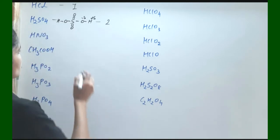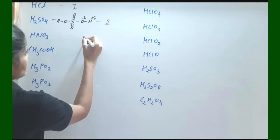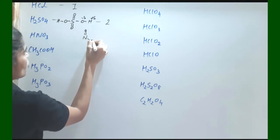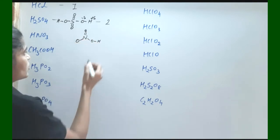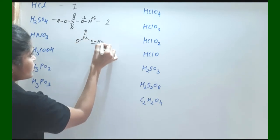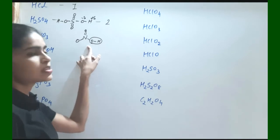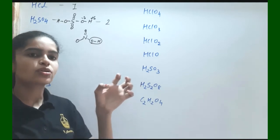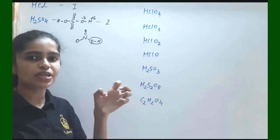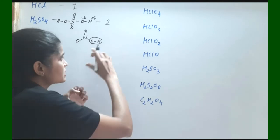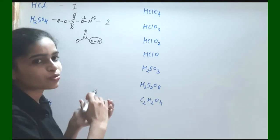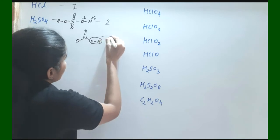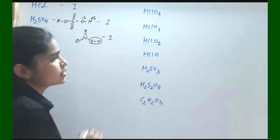Same way, HNO₃. The structure of HNO₃ is N with double bond O and OH. When hydrogen is bound with this oxygen, oxygen has higher electronegativity, so it attracts electrons more strongly and H is loosely bound — easily replaceable by the base. So its basicity is equal to 1.